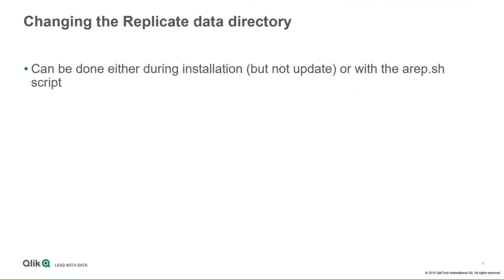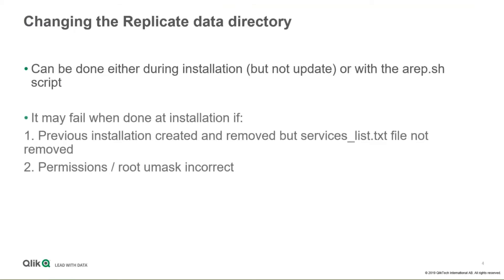Changing the Replicate data directory can be done during a new installation, or with the shell script arep.sh, which is documented in the Replicate user guide. Some customers have had problems changing the data directory on installation. We found that they previously installed and then uninstalled Replicate, but the uninstall does not remove the services list text file. The installation script that runs via RPM checks the services list file and puts the data directory where it formerly was — not where you specify. The workaround is to remove the services list file before doing the second install.